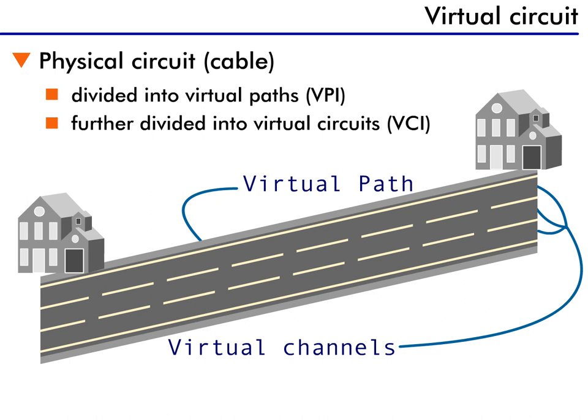Let's look again at the big picture. A physical connection between two devices is called a physical circuit. Within that cable, you can divide the available bandwidth into multiple virtual paths. Then within each virtual path, you can further divide the traffic into virtual channels.